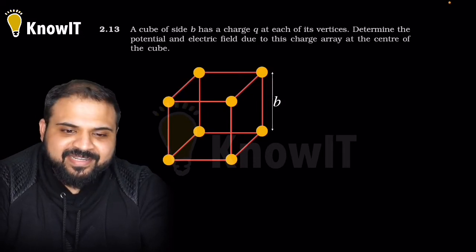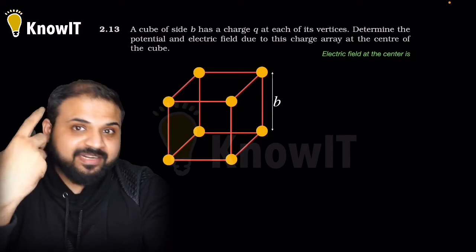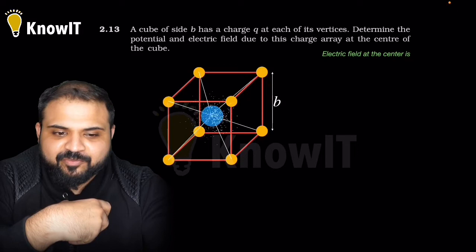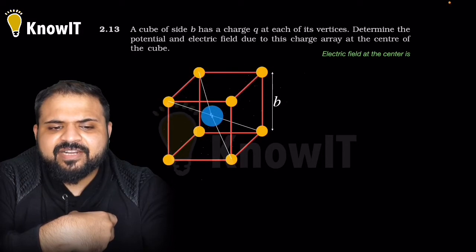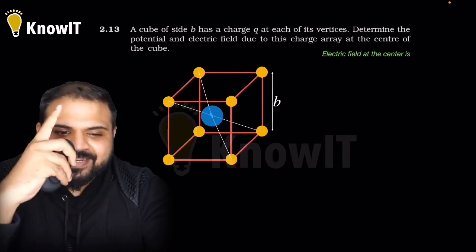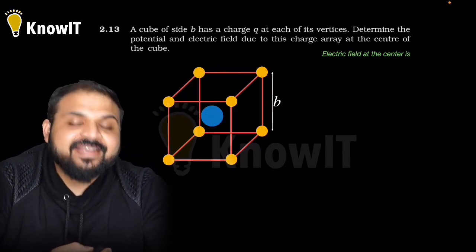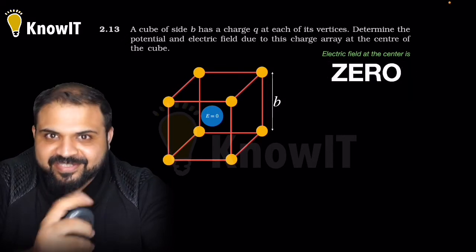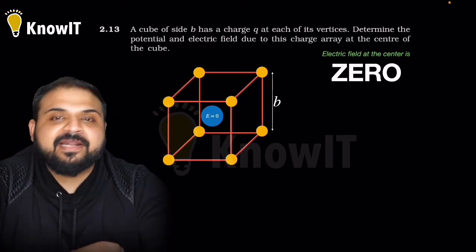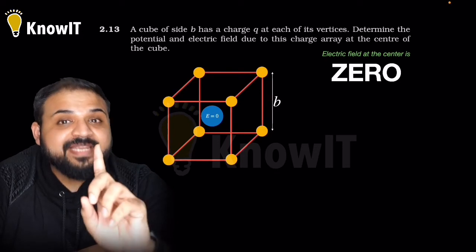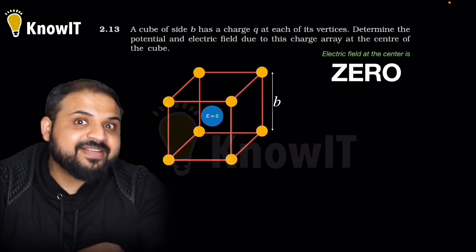Now determine the potential and electric field due to this charge array at the center of the cube. First we'll estimate the electric field. Tell me, what will be the electric field at the center? There will be electric field due to all charges. If you look at the geometry carefully, opposite electric fields will cancel each other out. The opposite ones cancel, these opposite ones cancel, and definitely these opposite ones also cancel. What does that mean? This means the electric field at the center becomes zero. No electric field remains because for regular geometrical shapes, I told you in my previous lecture that if equal magnitude charges of equal polarity are distributed in regular geometrical shapes, the electric field at the geometrical center is always zero.